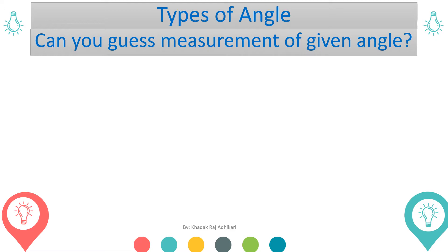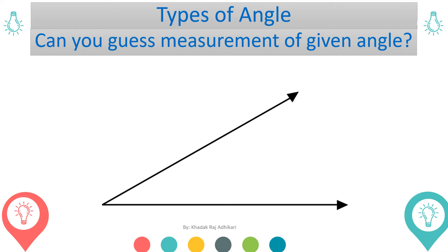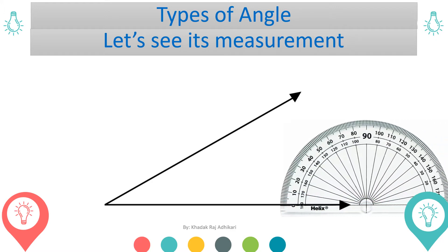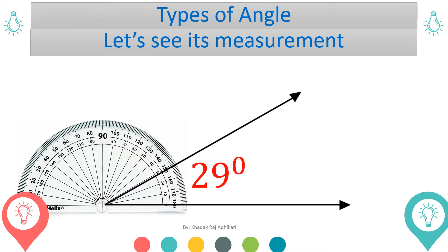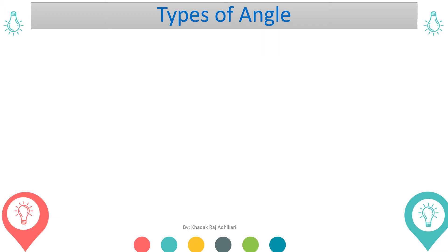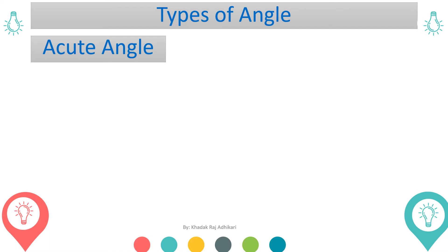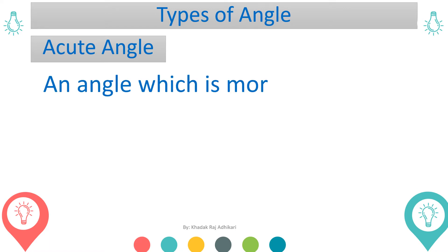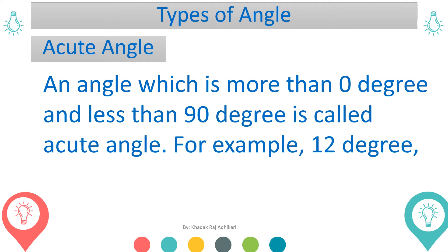Can you guess the measurement of the given angle? Let's see the measurement of this angle. It is exactly 29 degrees. This angle is known as an acute angle. An angle which is more than 0 degrees and less than 90 degrees is called an acute angle.